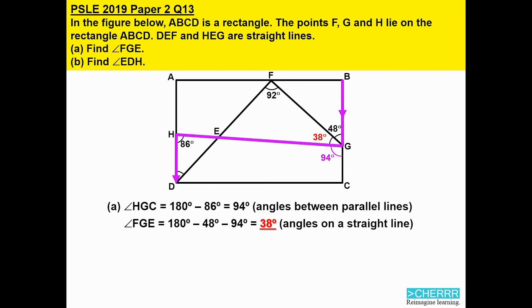So to find the missing angle FGE, all we need to do is take 86 degrees and minus 48. That would also get us 38 degrees.